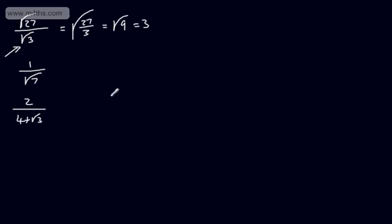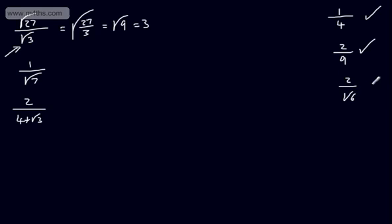Let's look at what is meant by a rational number. A rational number is one that could be written in the form A over B, where A and B are integers. An example of a rational denominator: we could have 1 over 4 — that is rational. We could have 2 over 9 — that's rational. If we've got 2 over the root of 6, this is irrational — root 6 is a surd. If we had 1 over 1 plus root 2, this is an irrational denominator, so this isn't a rational number.